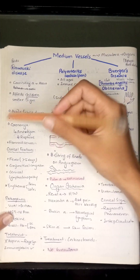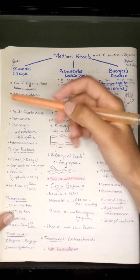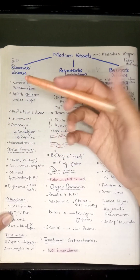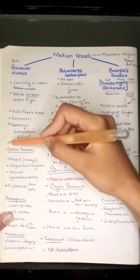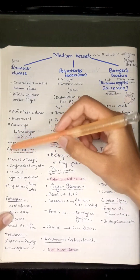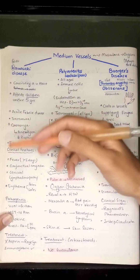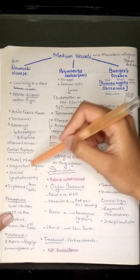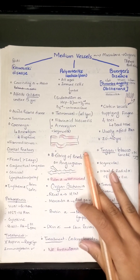Being a disease of the coronary artery, Kawasaki disease can lead to aneurysms and rupture, potentially causing hemorrhage. It leads to fibrinoid necrosis. The clinical features include persistent fever for more than five days, conjunctival congestion, cervical lymphadenopathy, and erythema of the palms and soles.